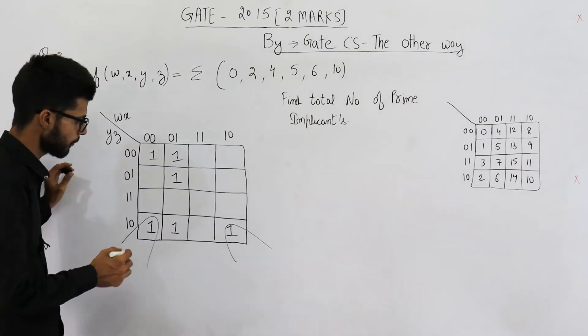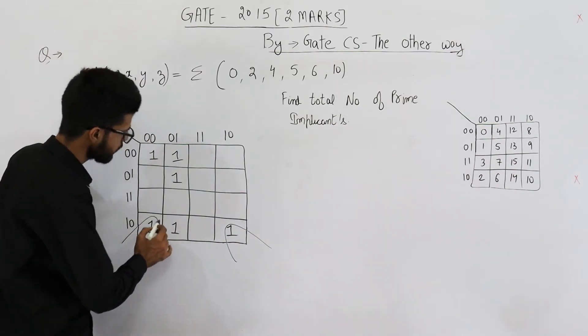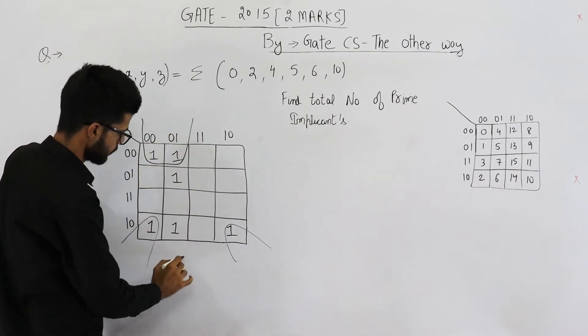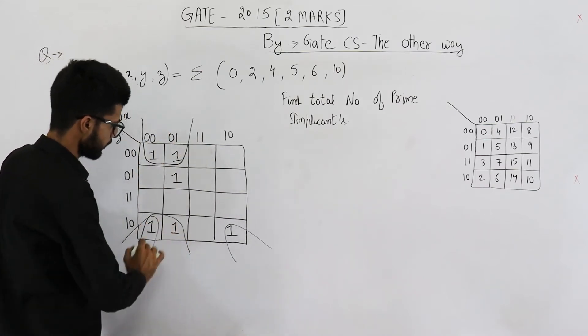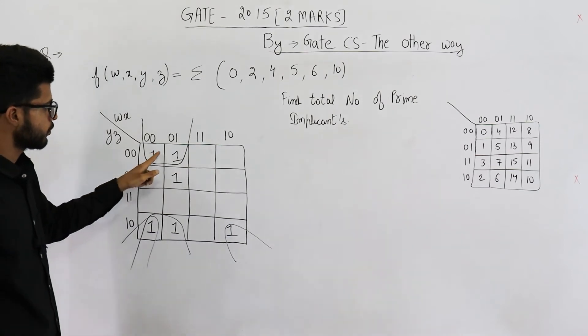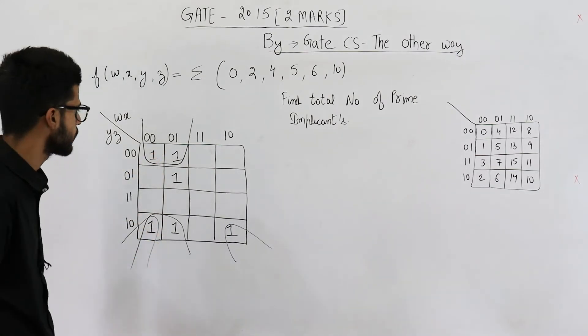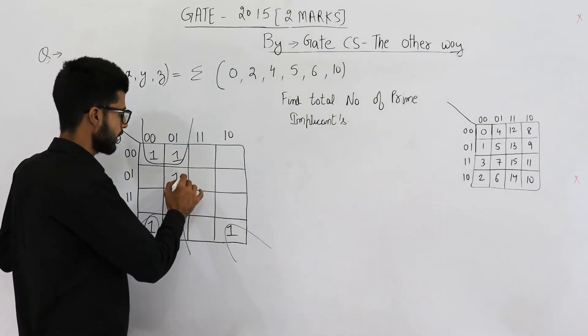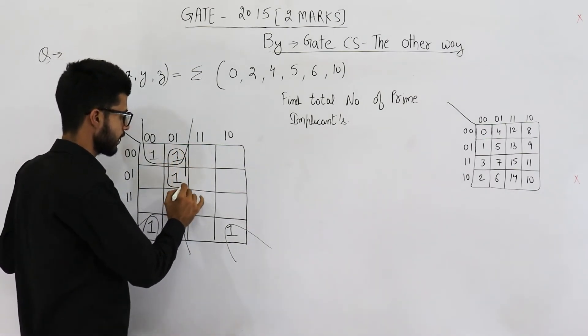Now let's try to group this one. You can see we can either have a group of 2 or we can have a group of 4, so why not go for a group of 4. That means 1, 2, 3, 4, all these cells are grouped. Now only this one is left, you can see it has to be grouped like this.